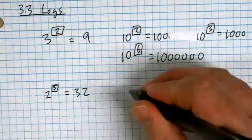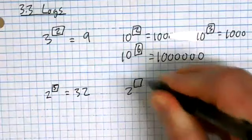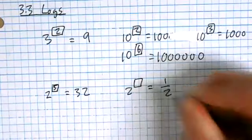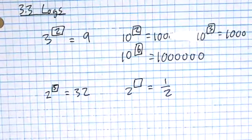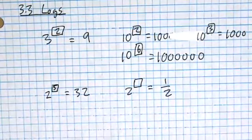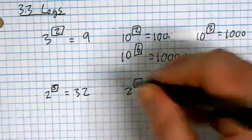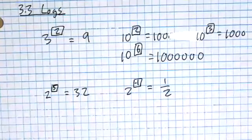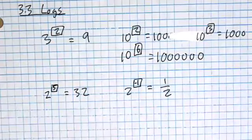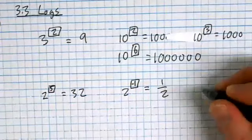How about a bit of a curve: what exponent could I put onto a two to make it equal to one half? How do we move the two down to the bottom? You're going to need a negative exponent. It's two to the first on the bottom, so that would be negative one. Two to the negative one is one half.